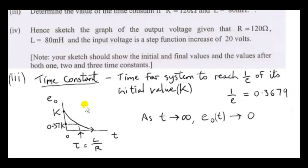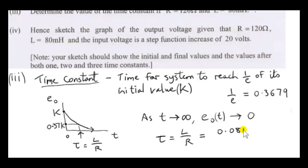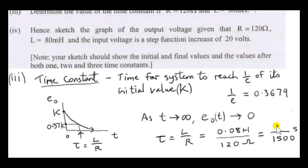L is 80 millihenries. We convert to SI units — a millihenry is 1/1000 of a henry — so 80 divided by 1000 gives 0.08 henries. Resistance is 120 ohms. Using the correct SI units, tau equals L over R, which is 0.08 over 120, giving 1 over 1500 of a second. So it takes 1/1500 of a second for the output voltage to decrease to roughly 37% of its initial value.